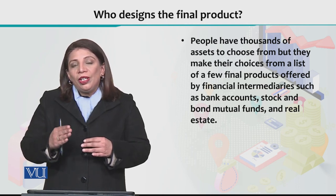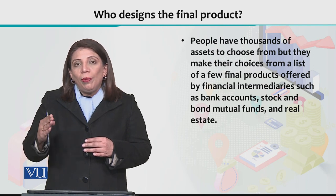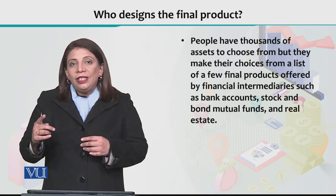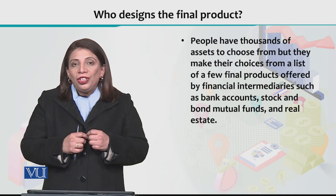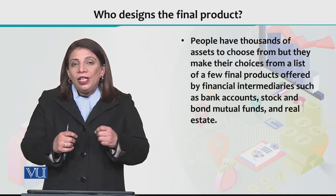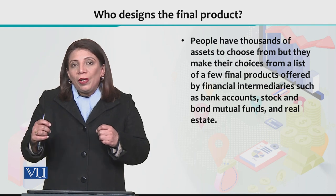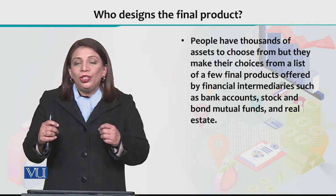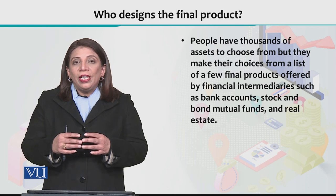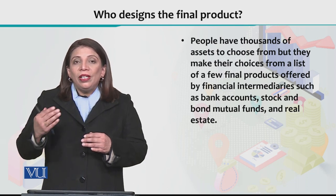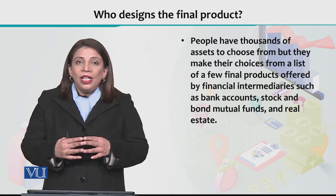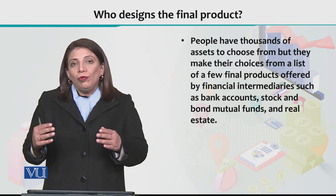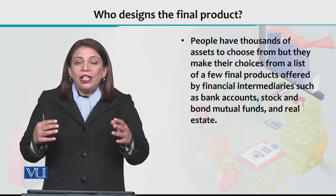When we say that the point of tangency between the capital allocation line and the efficiency frontier gives you the optimal allocation of the risky assets, we also said that the point of tangency of your capital allocation line, where you start from the vertical axis, represents all the combinations you can make. Not all allocations are equally optimal — you can select and account for some factors.